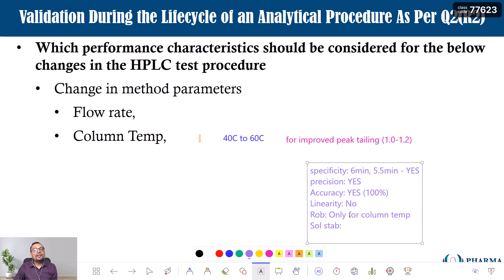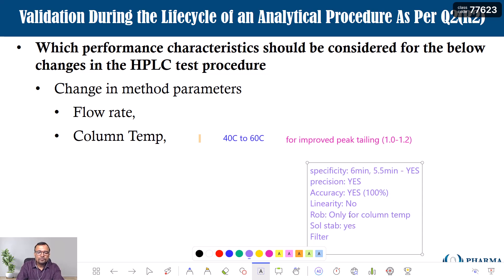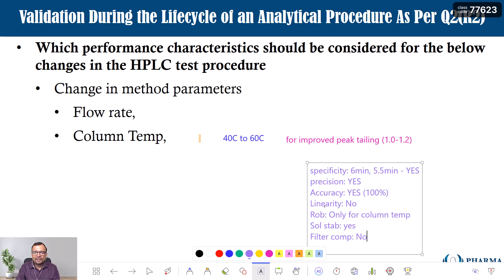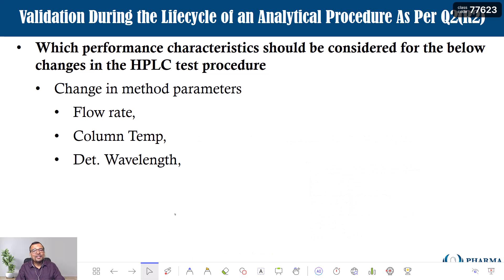Solution stability may be required at 60°C if your sample is thermally unstable or undergoing thermal degradation. If thermal degradation is not a concern, you can waive the solution stability. Filter compatibility is not required. So the important parameters for a column temperature change are: specificity (required), precision and accuracy (good to have), linearity (not required), robustness (only for column temperature), solution stability (required only if the analyte has thermal degradation), and filter compatibility (not required). In the next video, we will discuss the change in detection wavelength as an HPLC parameter. Thank you.